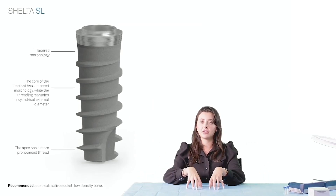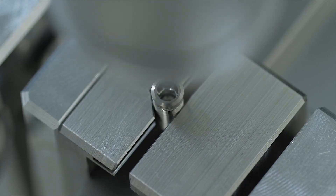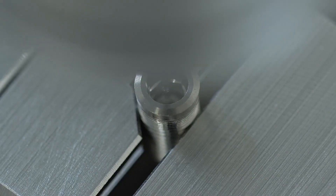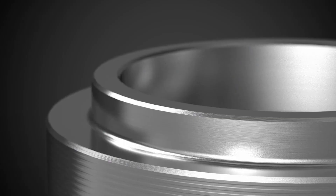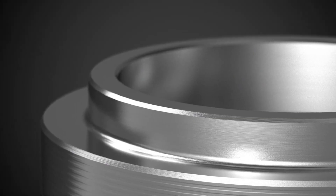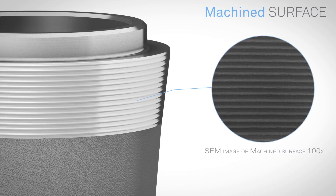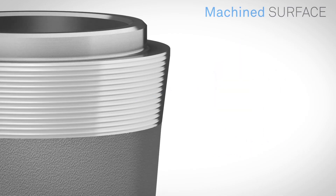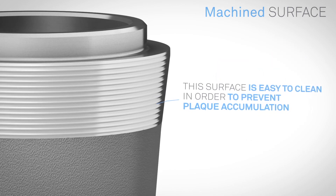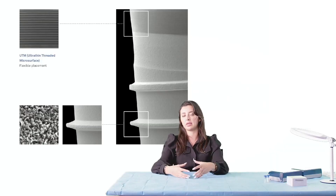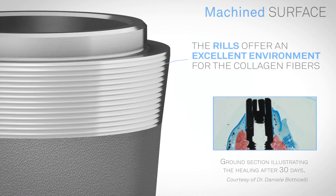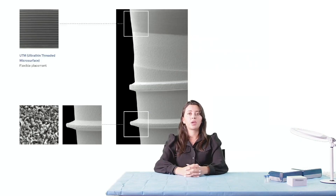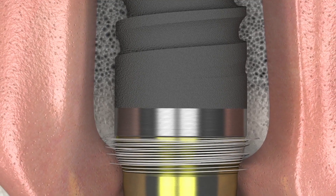The next part I'd like to stress is our collar — specifically our UTM collar surface. This is quite important because our implants are collared and the collar is a UTM micro-threaded surface. It is a machined and roughened surface, and the idea behind this is to give you the versatility of placement either subcrestally or supracrestally. This type of surface will integrate with subcrestal placement.